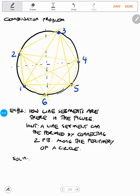Hi guys, let's continue with example number two in combination problems. The problem is how many line segments are there in the figure. Hint: a line segment can be formed by connecting two points along the periphery of the circle.